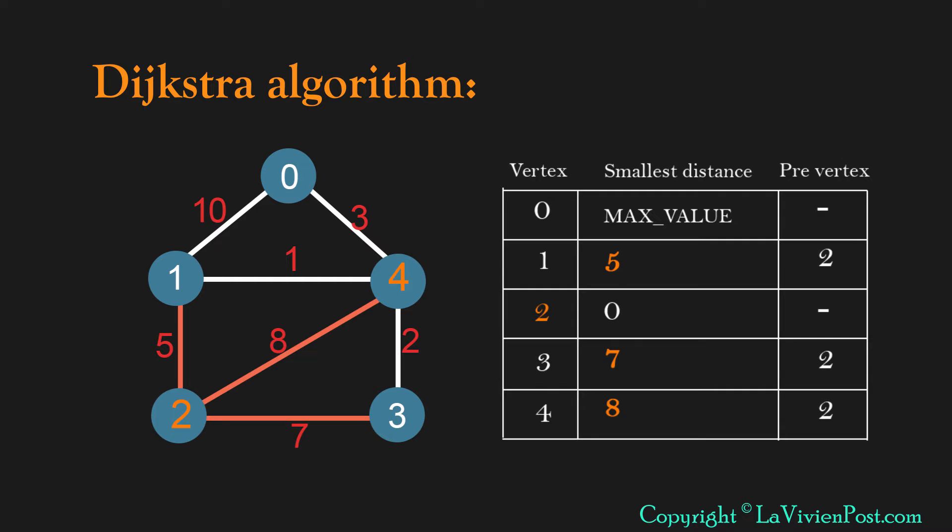In the first step we update all values if there's an edge between two and the vertex. Now we select the smallest distance among them, which is 5. The vertex is 1. The next step will use vertex 1 to reach other vertices.